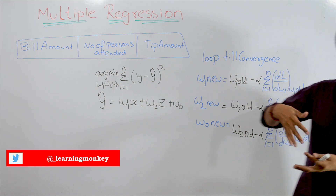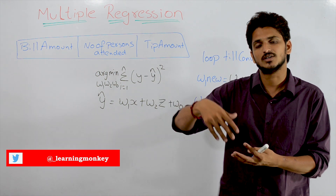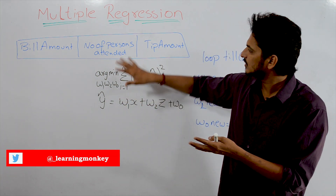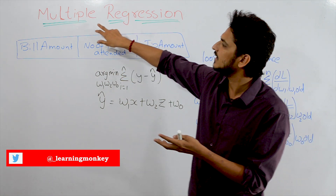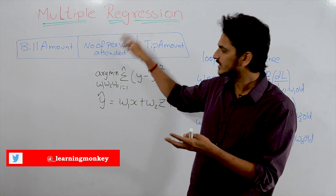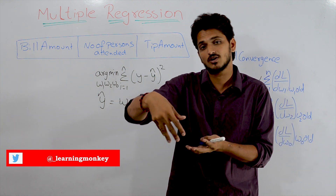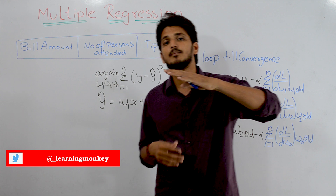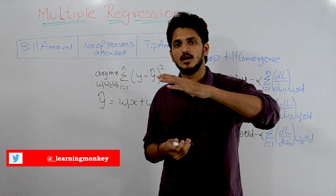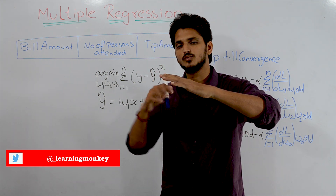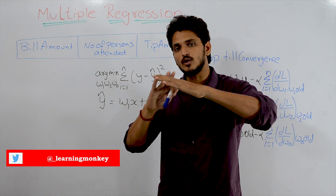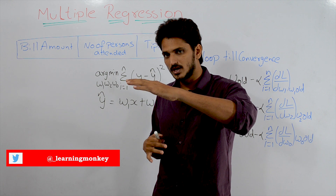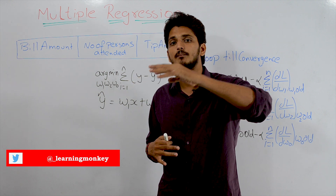We can extend this concept to n dimensions. After the two-dimensional coordinate system, we call it multiple regression. If we extend to a four-dimensional coordinate system, we have to identify a hyperplane — not a plane — that passes through the data and has minimum loss.